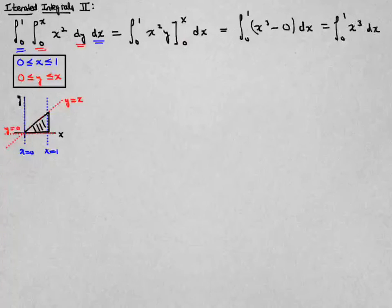Now we just simplify that, that's x cubed, we evaluate that integral, x to the 4th over 4, and evaluate that from 1 to 0, and we get an answer of 1 fourth minus 0, or just 1 fourth.